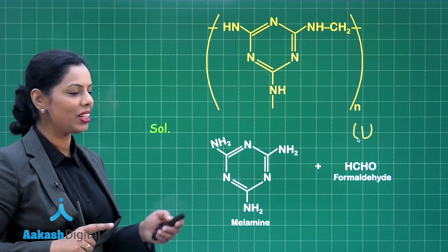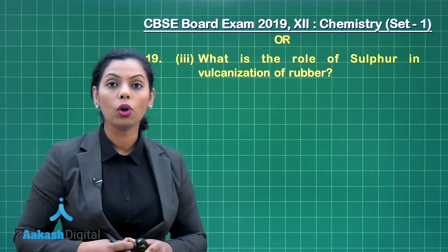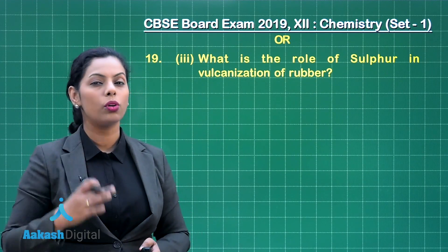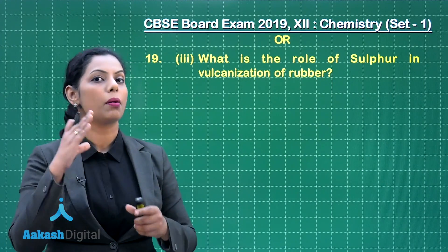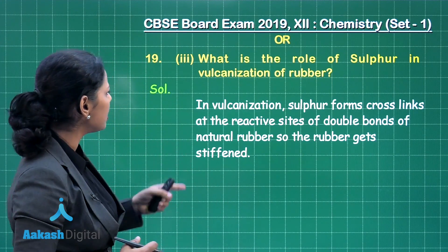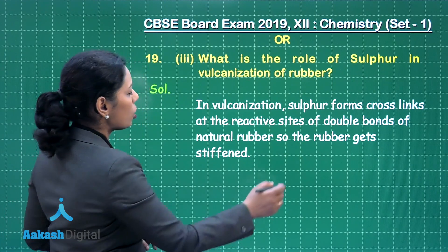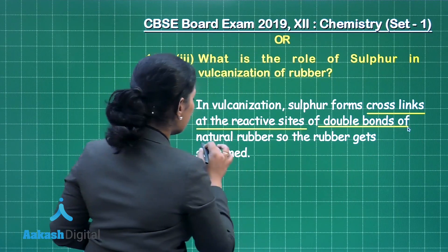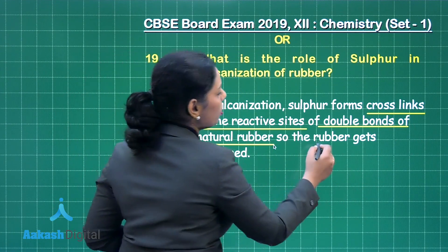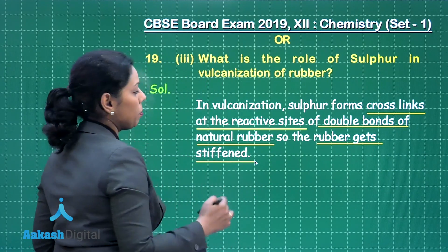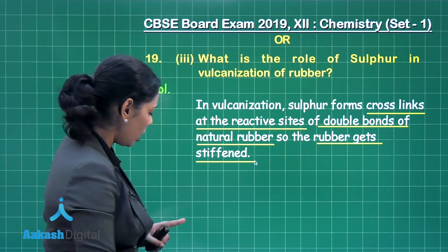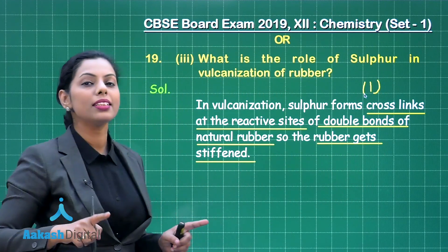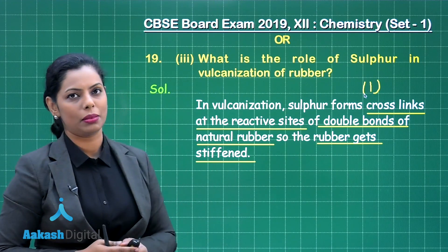The third part: what is the role of sulphur in vulcanization of rubber? The vulcanization process is used to make rubber hard. In vulcanization, sulphur forms cross-links at the reactive sites of double bonds of natural rubber, due to which the rubber gets stiffened and becomes hard. This will also give you one mark. So if you choose the second choice, you can obtain full three marks if you attempt in this manner.